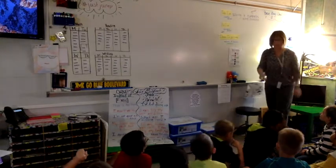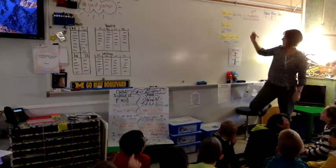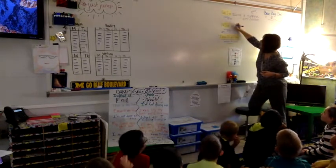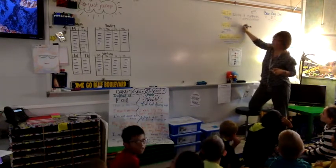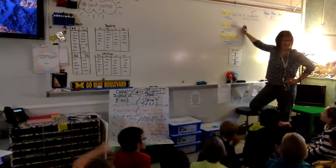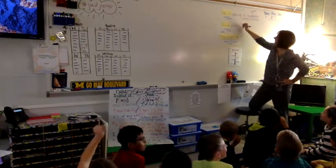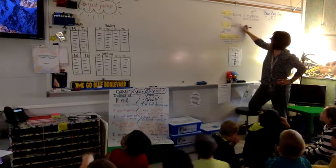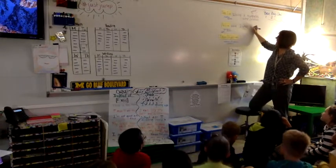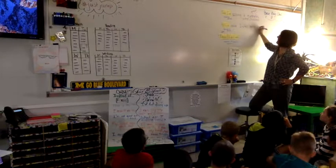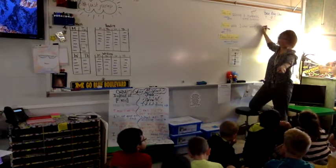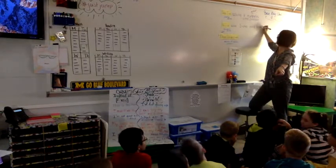So we can do what? What's our standard? So I can solve two-step problems using an unknown in operation. Can one person sum it up for us? I can solve two-step problems using an unknown in operation. What's an unknown? A variable. A variable, nice. High vocabulary.